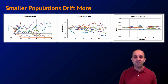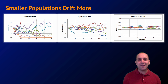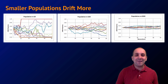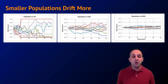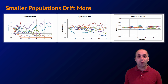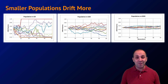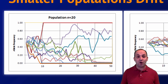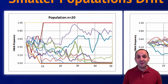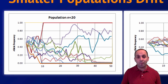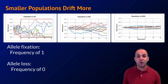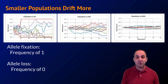These graphs show computer simulations of three different populations, each one ten times larger than the previous. Generations are on the x-axis and frequency of different alleles is on the y-axis, with individual alleles shown as different colored lines. Fluctuations in the smaller population are much greater than in the largest population. In the smaller population, some alleles are lost entirely — frequency goes to zero — and other alleles become fixed, meaning every individual has the same allele, with frequency reaching 1.0. This is one of the hallmarks of genetic drift.